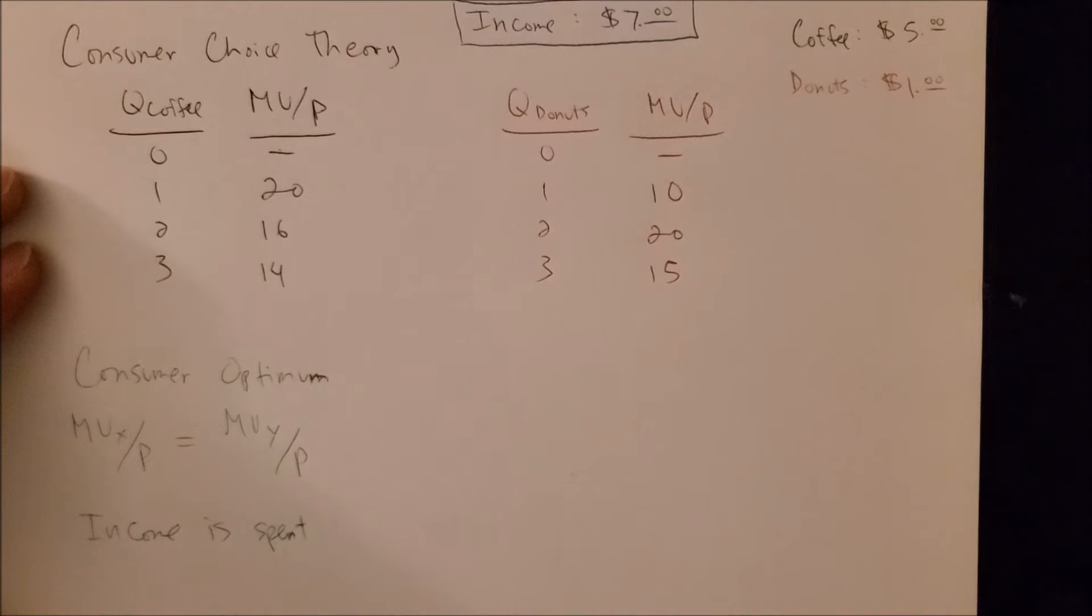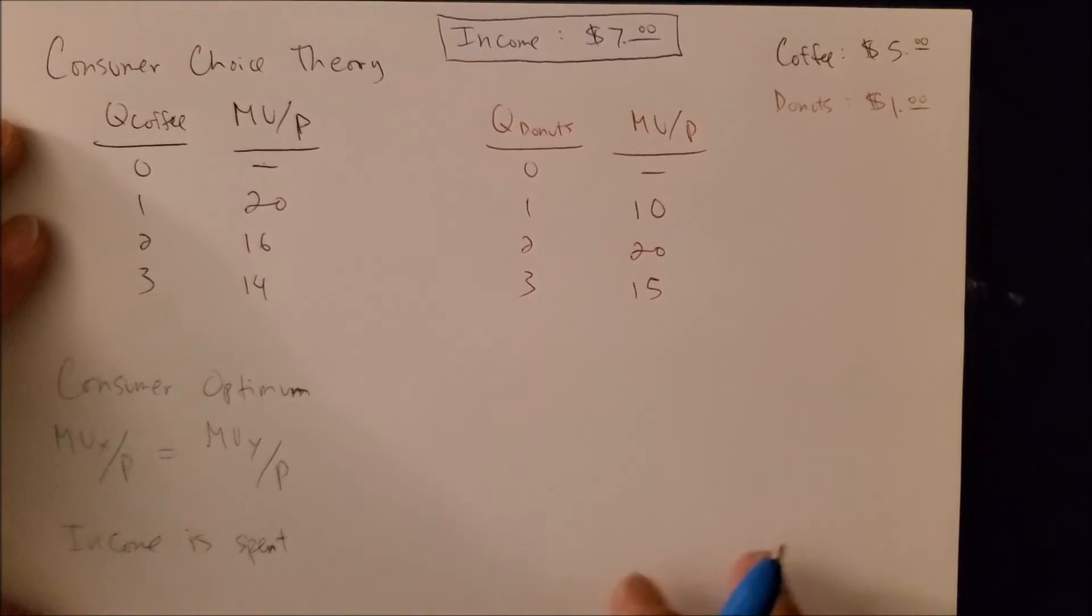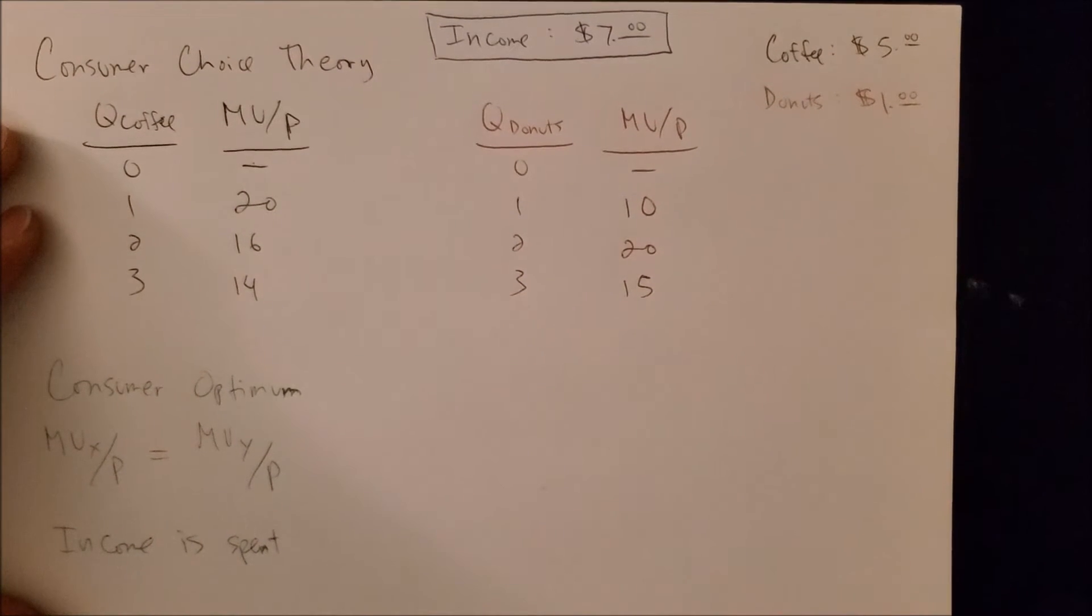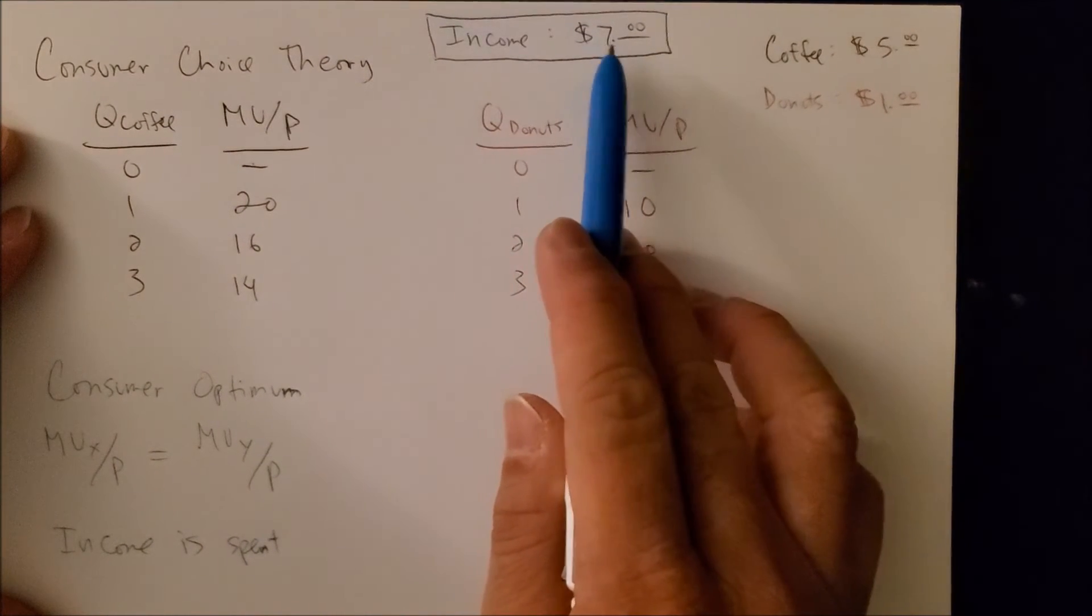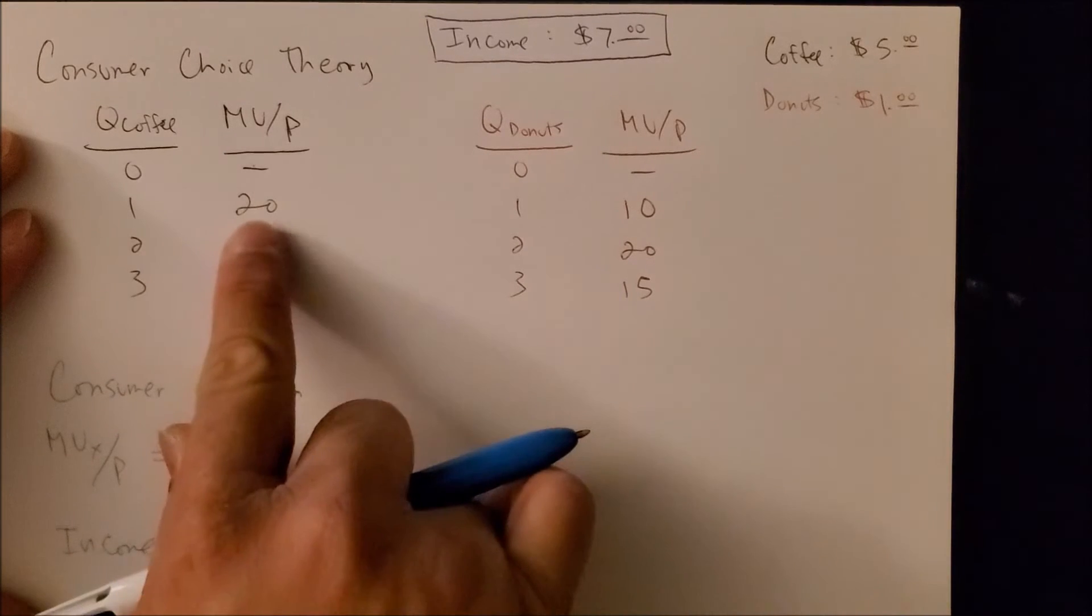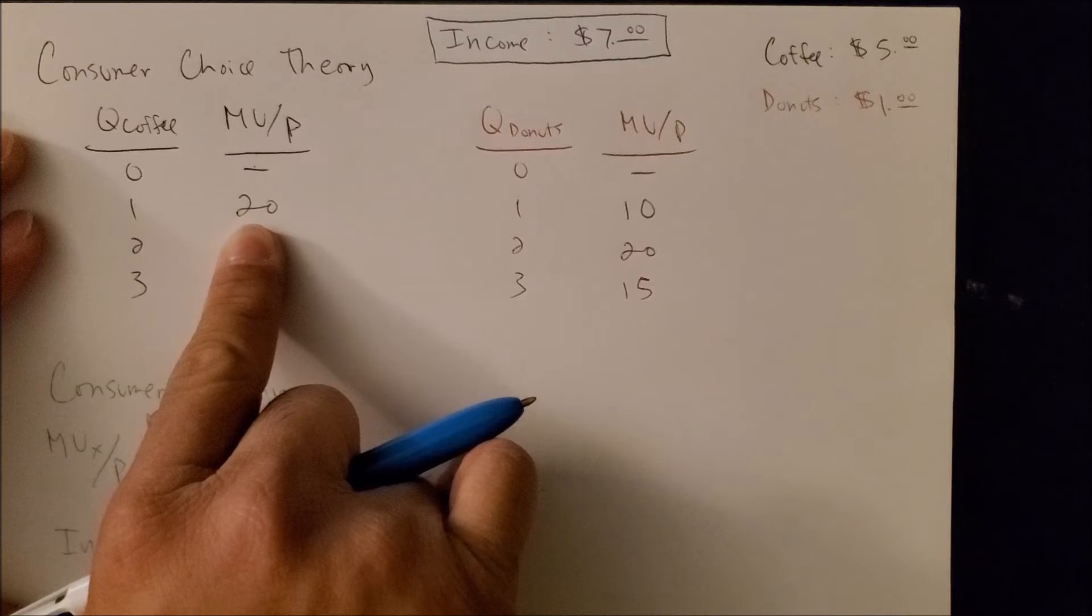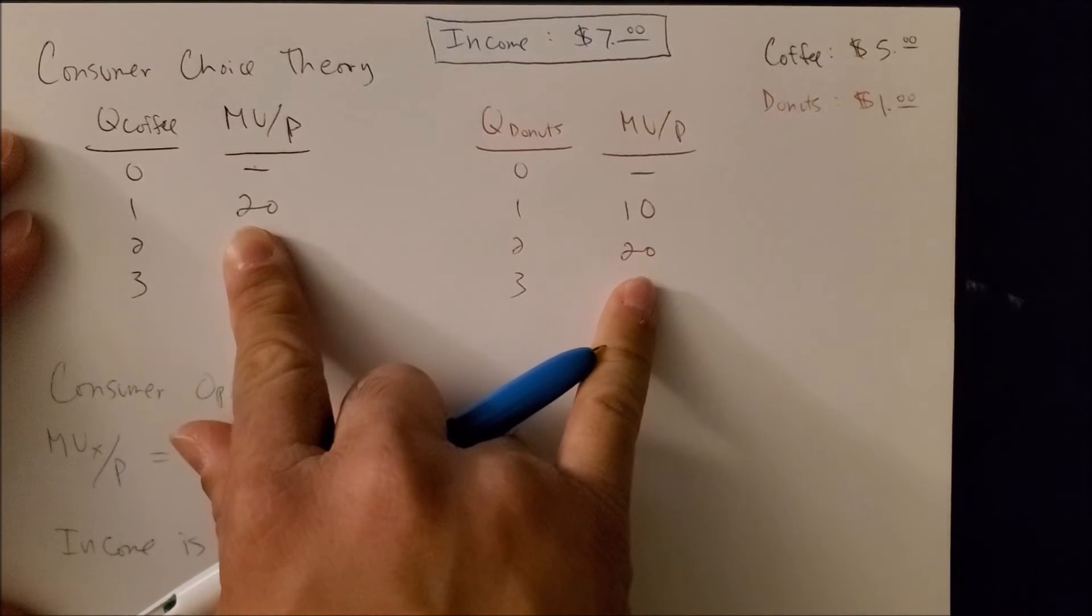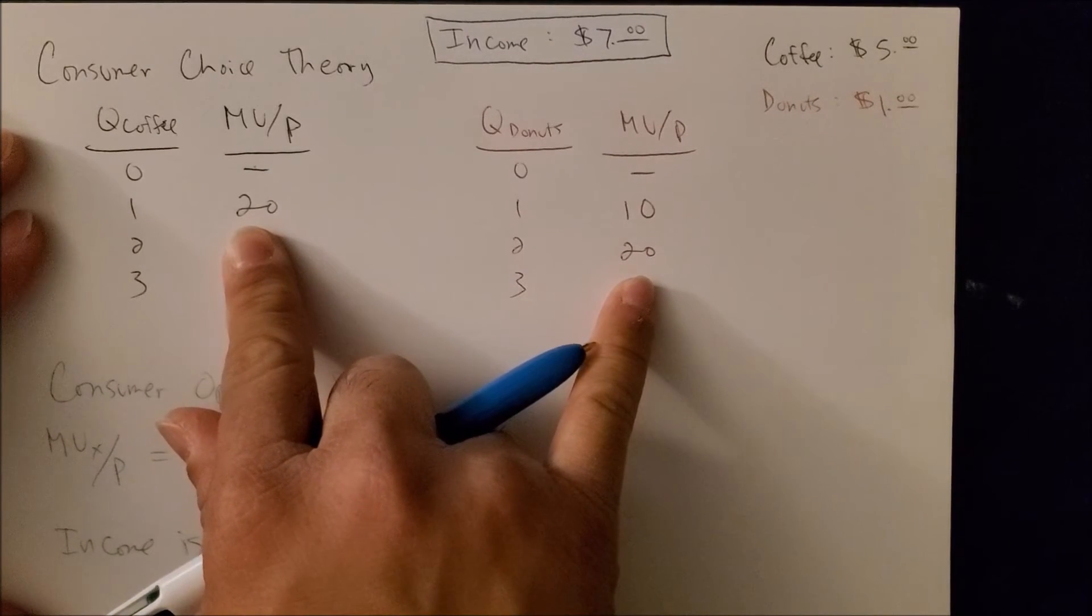We assume we're not going to have any change left over, but we're going to use every dollar that we have in our wallets. Now we can go back to our chart and see that if we have an income of seven dollars, it would make sense to focus on the following goods for coffee: we have a 20 and a 20 in both goods.